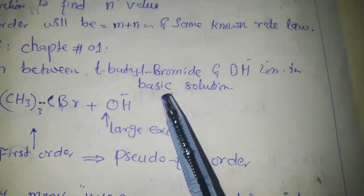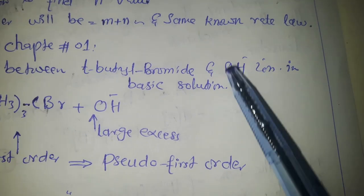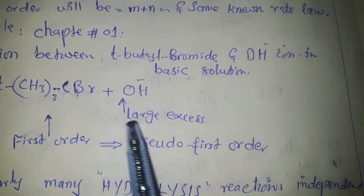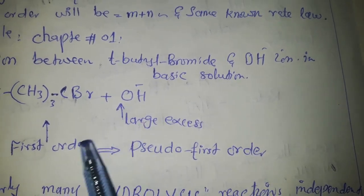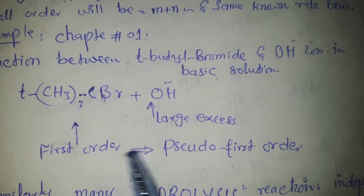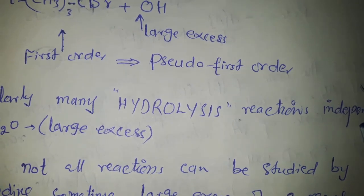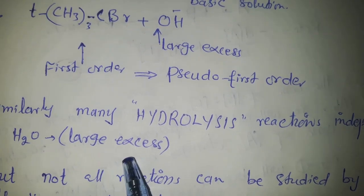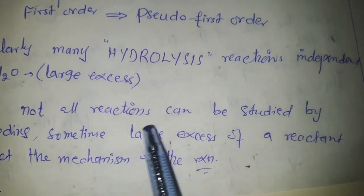The reaction we studied was between tertiary butyl bromide and hydroxyl ion — a substitution reaction in basic medium. In the basic solution, there is a large excess of hydroxyl ion, and the reaction is first order — that is, pseudo-first order — with respect to tertiary butyl bromide. Similarly, many hydrolysis reactions are independent of water because water is present in large excess.